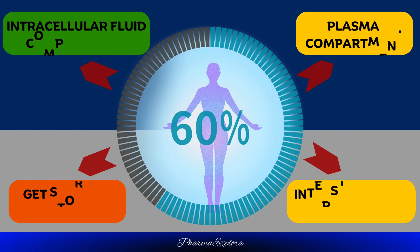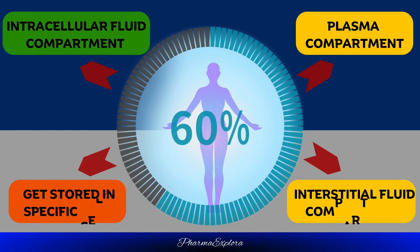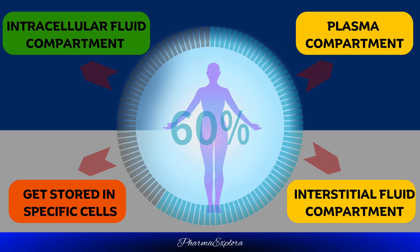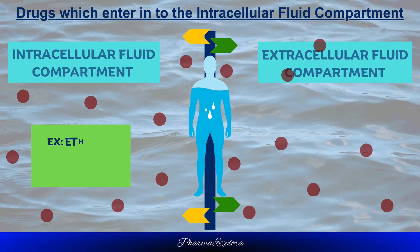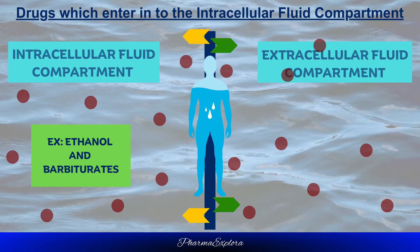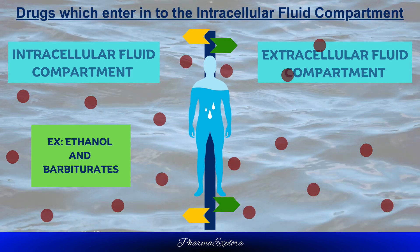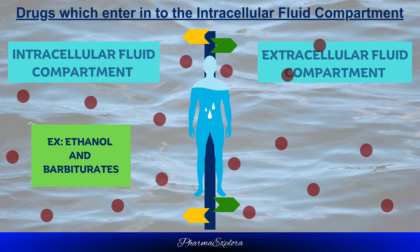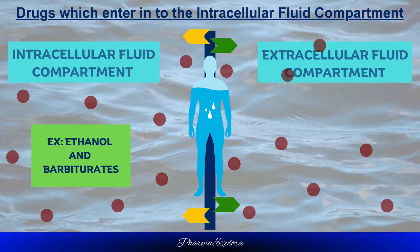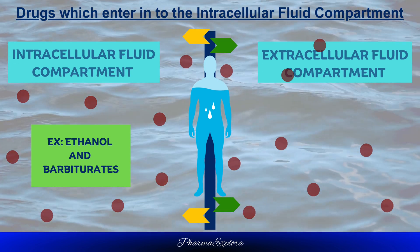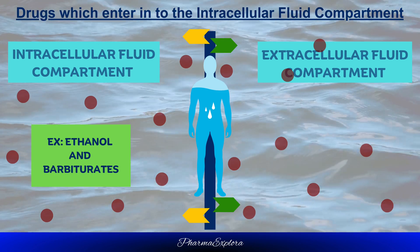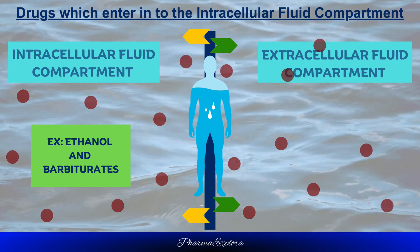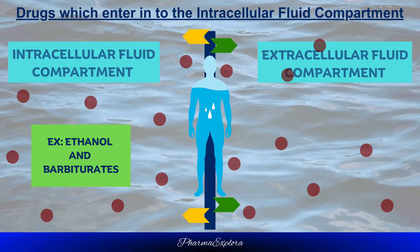When a drug enters the body from whatever route of administration, it can spread among the three main water compartments — blood plasma, interstitial fluid, and intracellular fluid — or get stored in specific cells. Small, fat-soluble drugs can easily cross the endothelial slit junctions to enter the interstitial fluid and further infiltrate cell membranes to reach the intracellular fluid. Consequently, these drugs distribute throughout a much larger volume, approximately 60% of body weight, or around 42 liters in a 70 kg person. Examples include ethanol and barbiturates.